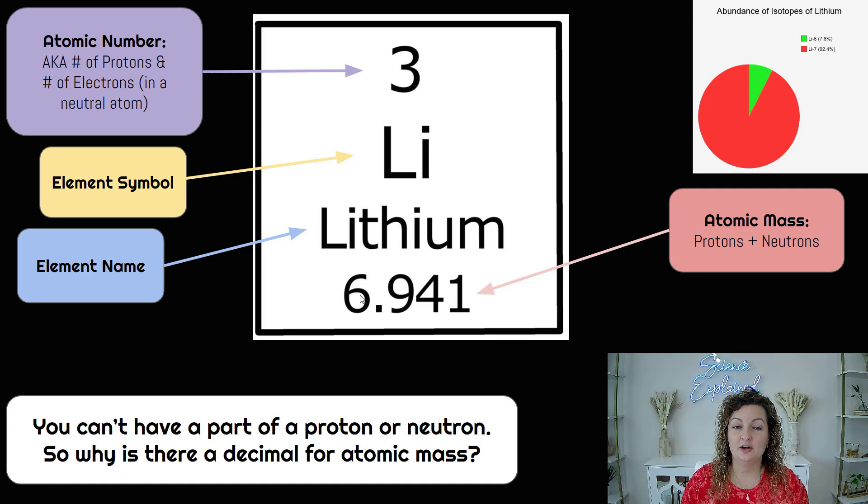Now, if we look at our mass number, isn't that making sense? We have 6.941. This number is incredibly close to seven, and the other one is lithium-6. So it's much closer to seven than it is six. So it's going to be a percentage based off of the abundance of what occurs in nature.